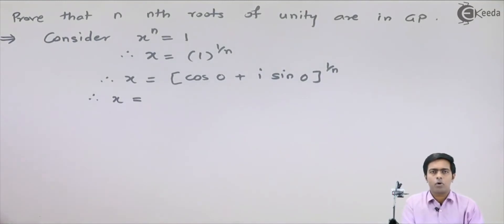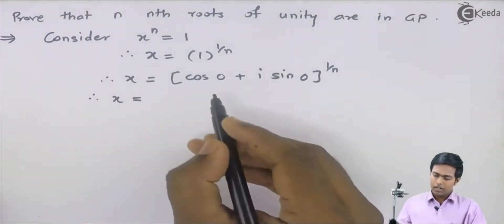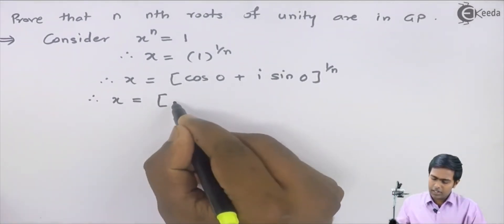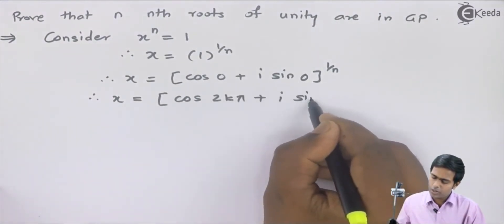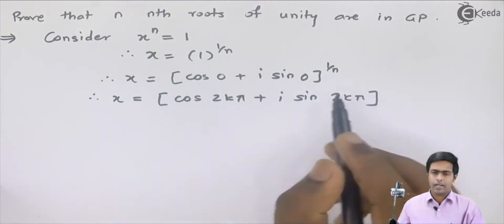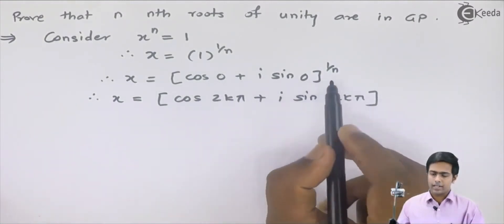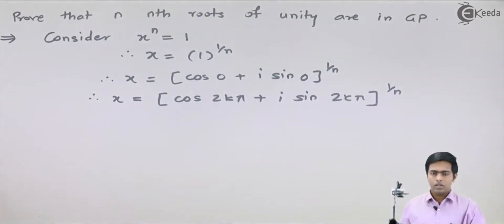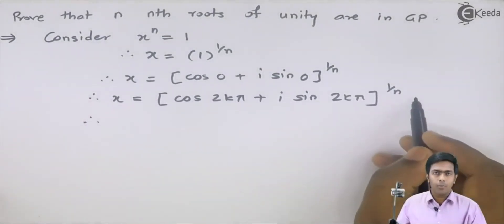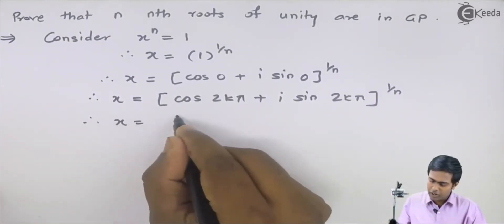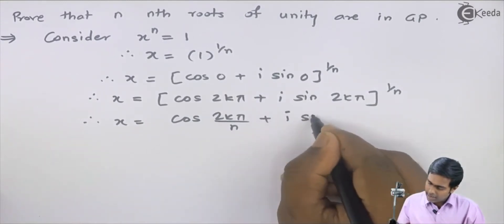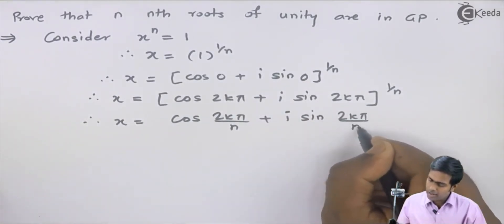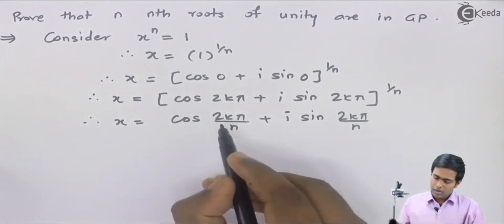In this type of problem, we have to consider the general polar form of a complex number. So we write this as cos(2kπ) + i·sin(2kπ), adding 2kπ to the amplitude to get the general polar form. Applying De Moivre's theorem, we get cos(2kπ/n) + i·sin(2kπ/n).